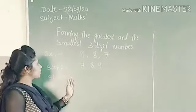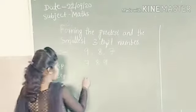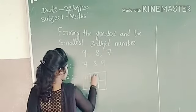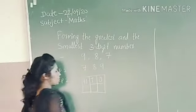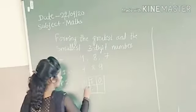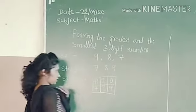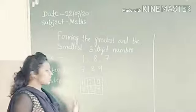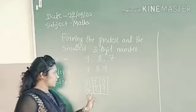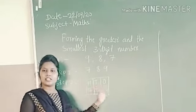Now we arrange these numbers in ascending order: 7, 8, 9. We will put these numbers in the place value chart with 100s, 10s, and 1s. I will put 7 in the 100s place, 8 in the 10s place, and 9 in the 1s place. The smallest 3-digit number with the given digits is 789.